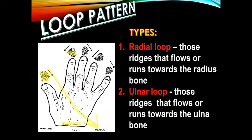On the second example, the ridge in the fingerprint pattern tends to go towards the radius bone or towards the thumb, so this is considered as the radial loop. On our third example, the ridge runs towards the ulnar bone or the little finger, so this is considered an ulnar loop. On the fourth example, the ridge tends to run towards the thumb or the radius bone, so this is considered as the radial loop.